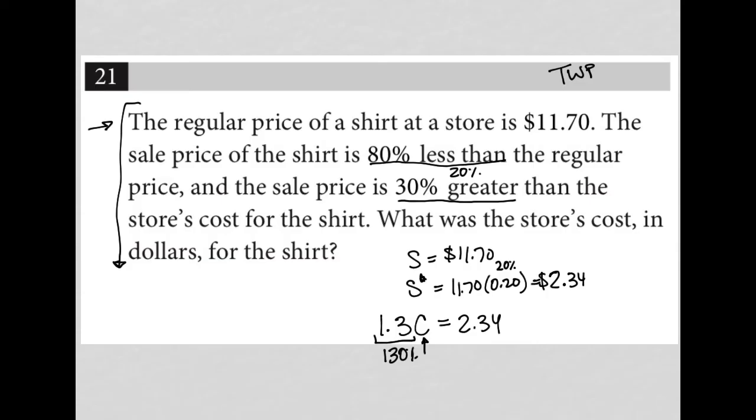Which means I can solve for C by simply dividing both sides of this by 1.3. So the cost, go back to my calculator, $2.34 divided by 1.3 is $1.80.